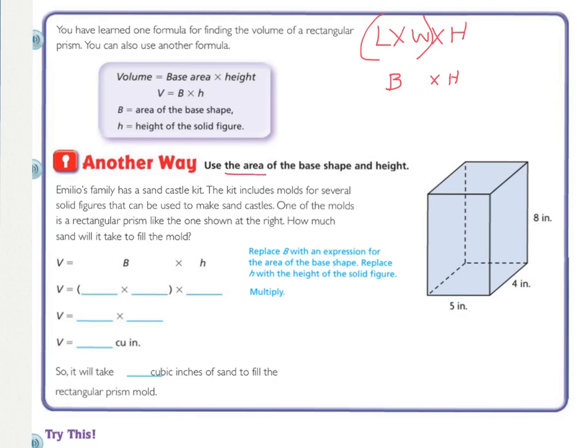So this time we're going to use the area of the base shape and height. So Emilio's family has a sandcastle kit. The kit includes molds for several solid figures that can be used to make sandcastles. One of the molds is a rectangular prism like the one shown at the right. How much sand will it take to fill the mold? Press pause, squiggle underline what you're being asked to find, and then your information is given in your diagram so you don't need to circle it. So we're being asked how much sand will it take to fill the mold? So they want to know what is going to be going inside this rectangle.